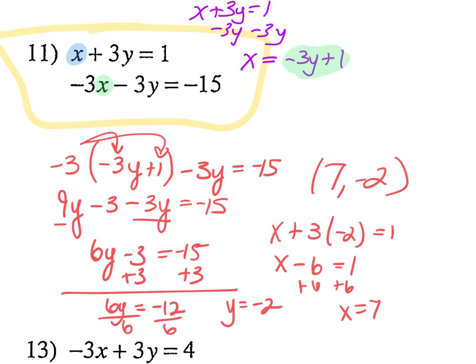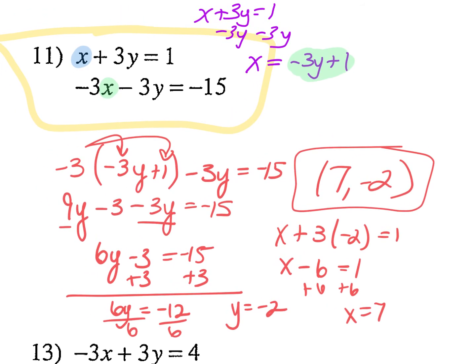Before I move on, let's just check it. In the top equation: 7 plus 3 times negative 2 is negative 6, so 7 plus negative 6 gives me 1. Then in the bottom one: negative 3 times 7 is negative 21, and negative 3 times negative 2 is 6. So negative 21 plus 6 is negative 15. That works — we're good to go.